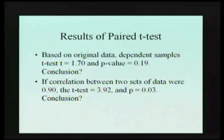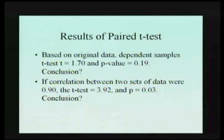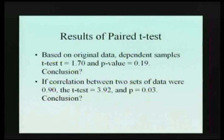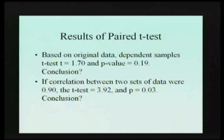These two samples came from the same population. To show you the advantage of having a good correlation: if the correlation r went up to 0.90, all of a sudden the t-test would go to 3.92, and the p value would be 0.03.